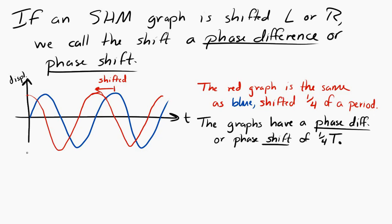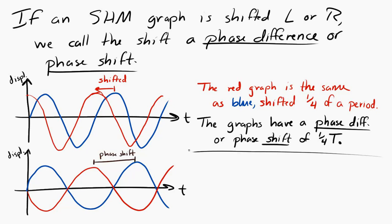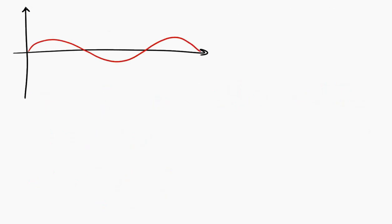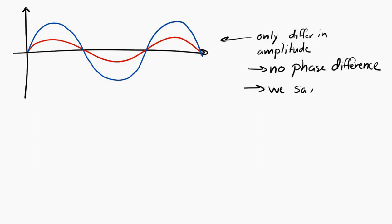If one graph looks like a sine and the second looks like a negative sine, the phase difference is half a period. If two graphs look very similar but have different amplitudes — different maximum displacements — there is no phase difference between them, and in that case we say the two graphs are in phase.